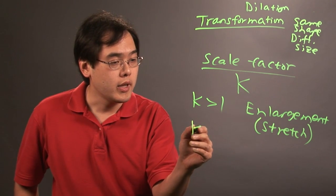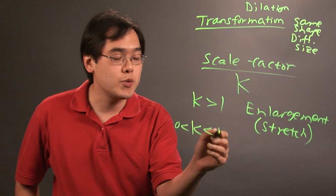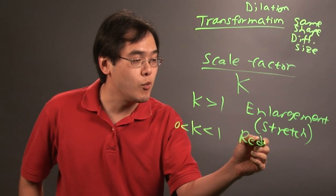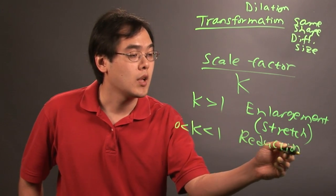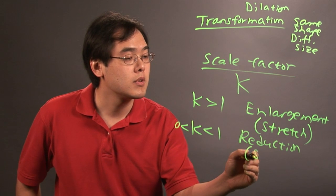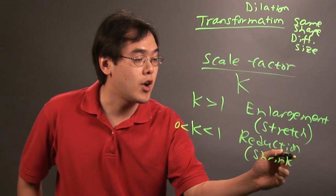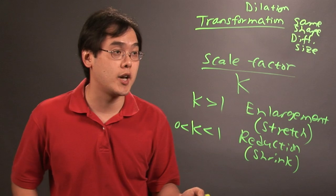Now, if the scale factor is between 0 and 1, then you have a reduction. And reduction can also be thought of as a shrink, whether it be vertical or horizontal.